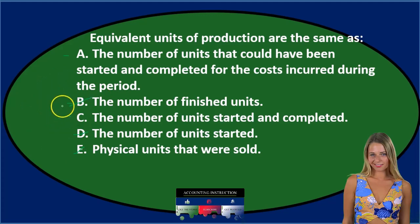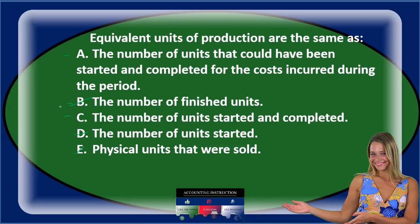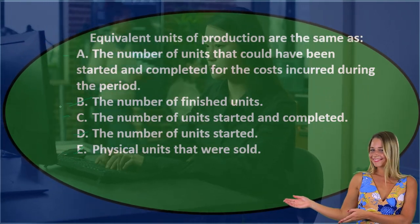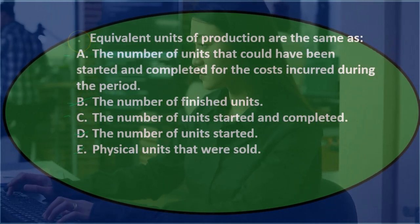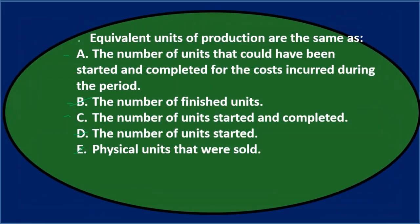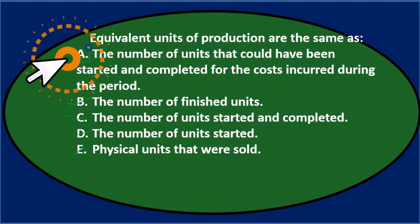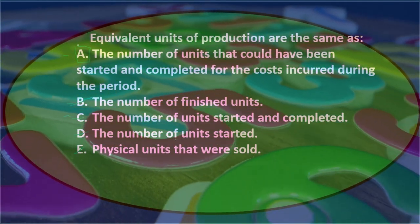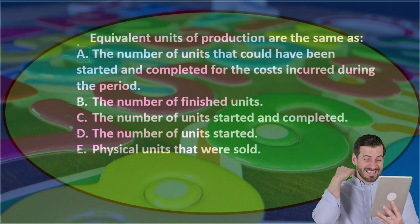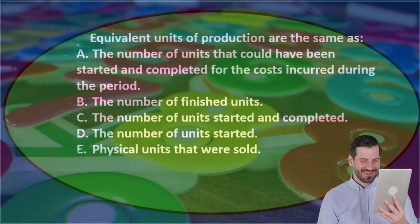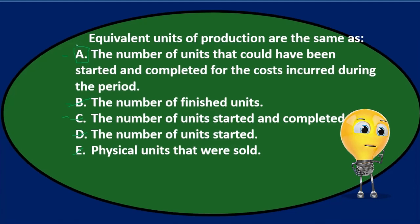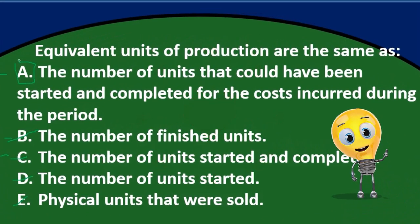Narrowing it down to A and C: equivalent units are either A) the number of units that could have been started and completed for costs incurred during the period, or C) the number of units actually started and completed. Since equivalent units involve some type of estimate, and C doesn't imply an estimate, the answer is A. Equivalent units is that estimating-type number used in the process cost system.